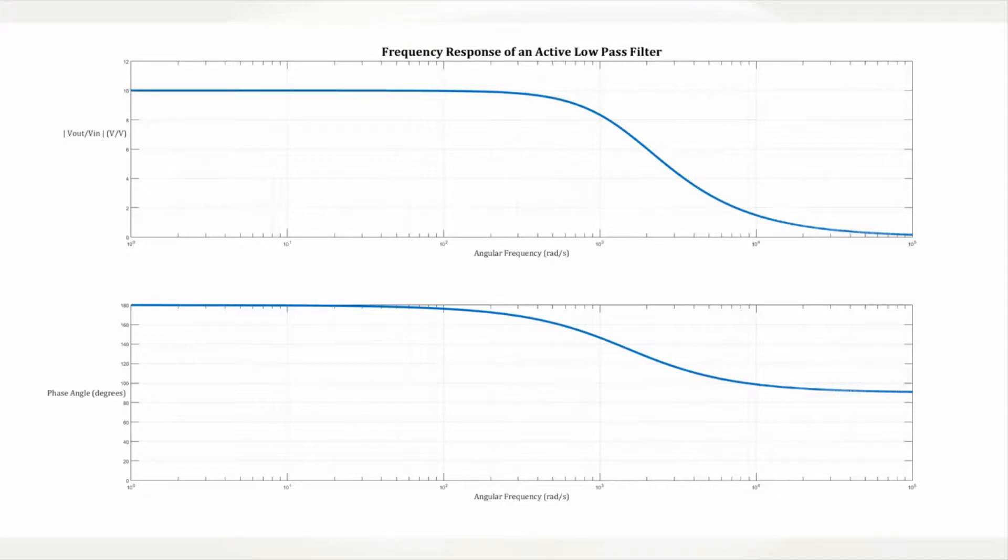On the graphs of magnitude and phase versus the log of frequency we get these. Both ends of the graph limit with quantities that are constant with frequency with any change occurring over a relatively small range of frequencies.